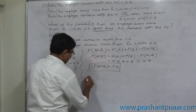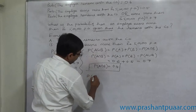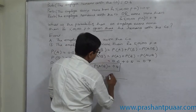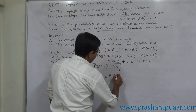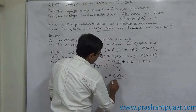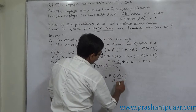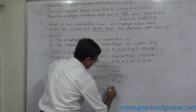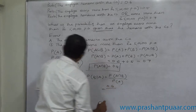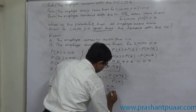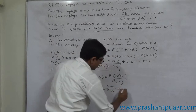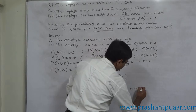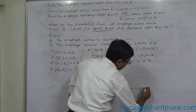Now we can calculate P(B|A), which equals P(A ∩ B) divided by P(A) — that is, 0.4 divided by 0.6. The answer is 2/3, or approximately 0.667.